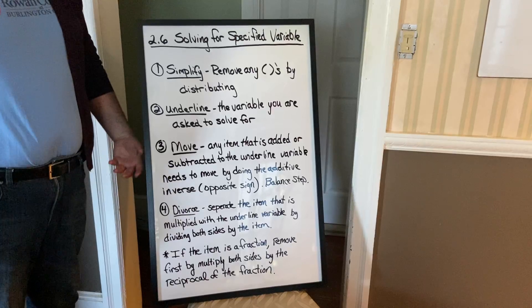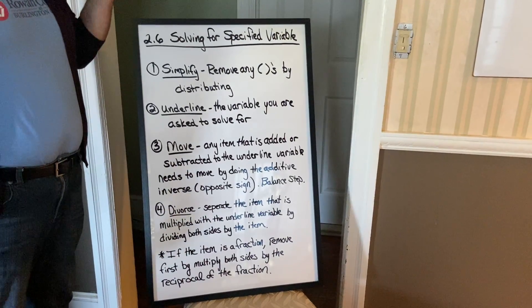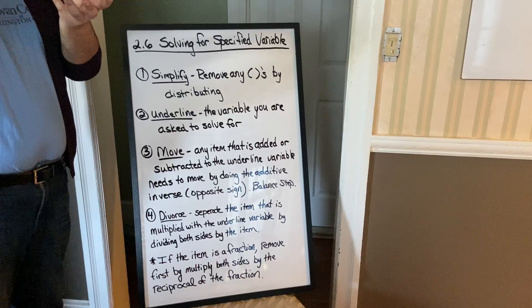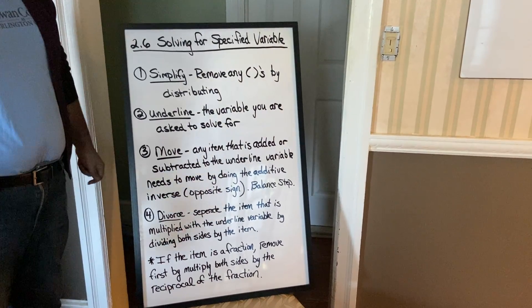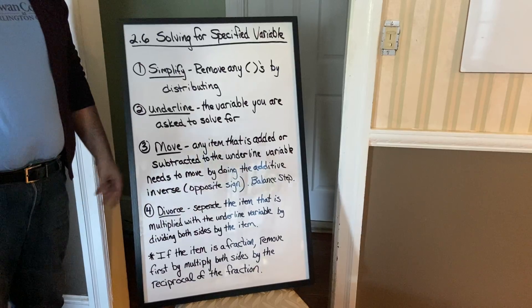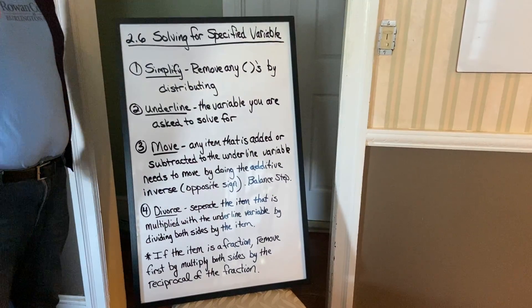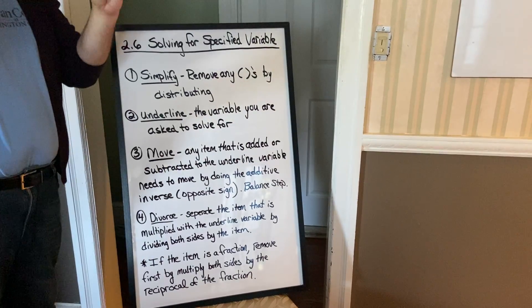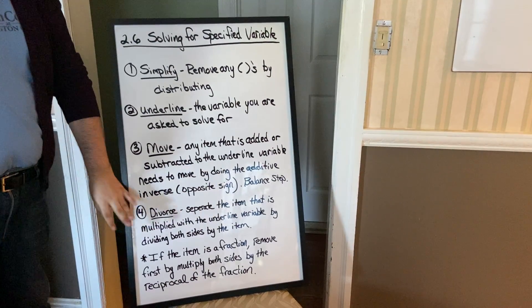And then, our final step is the divorcing step. That's where you're going to separate that underline variable with anything else that is multiplied with the underline variable. So, sometimes it could be a number, like a coefficient, or it could be another letter. So, a lot of times, I'll use air quotes when I say coefficient when it comes to this stuff.